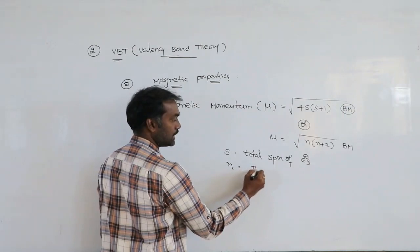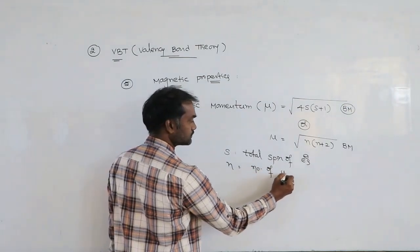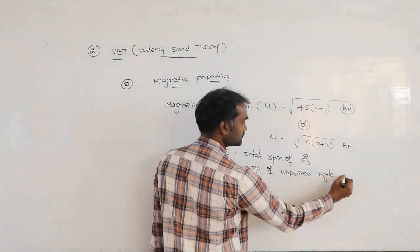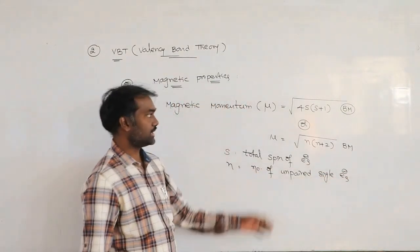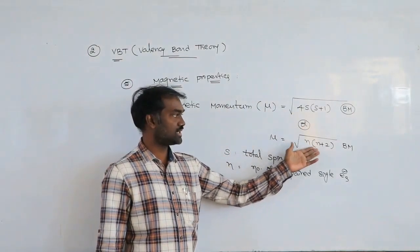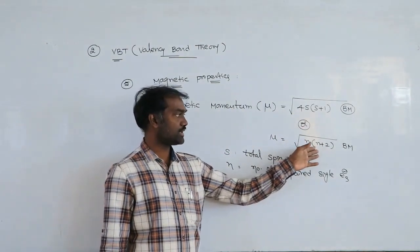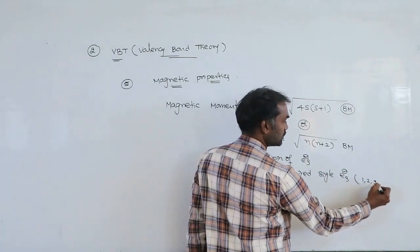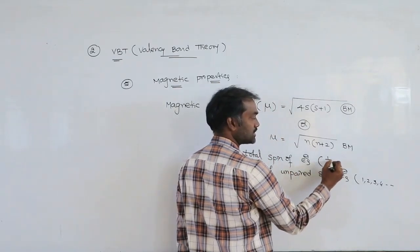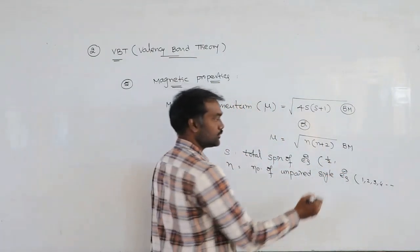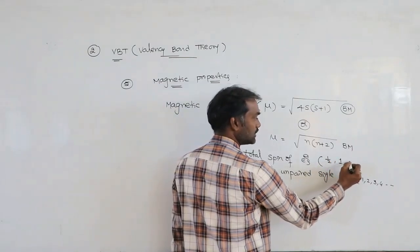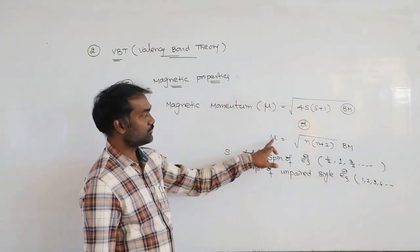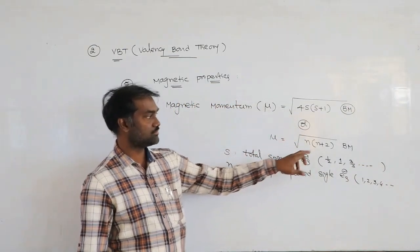Otherwise, mu equals under root of n into n plus 2 Bohr magnetons. Here S is the total spin of the electrons, and n equals the number of unpaired single electrons. You can apply either formula — using total spin or counting unpaired electrons — and you will get the same mu value. The unit is Bohr magneton.